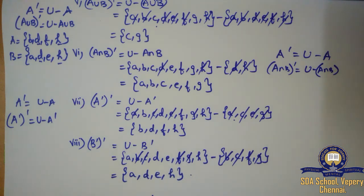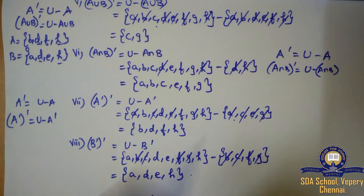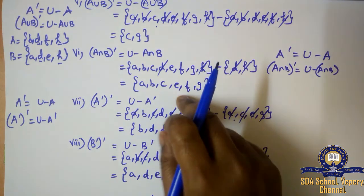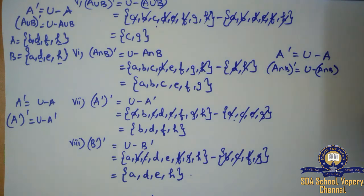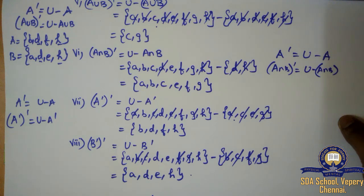We have totally completed 7 subdivisions. We completed the second sum, third sum, and fifth sum. The first, sixth, and seventh sums are Venn diagram questions. The fourth sum with 8 subdivisions — do it as an assignment and show it to me. I hope you all understood. If any doubts, feel free to contact me. Thank you children, stay safe.